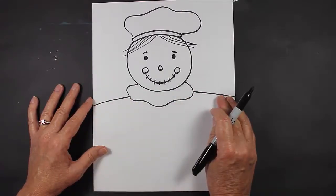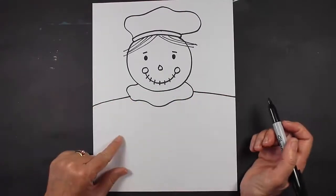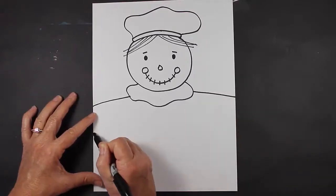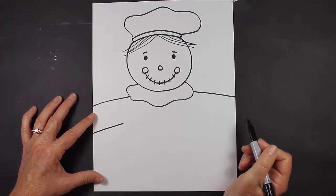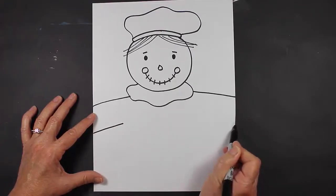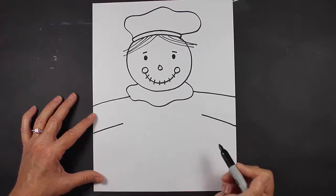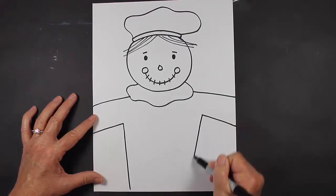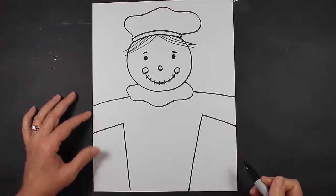Now we're going to make the shirt. Let's come up with a slanted line and another slanted line, and then we'll come straight down.